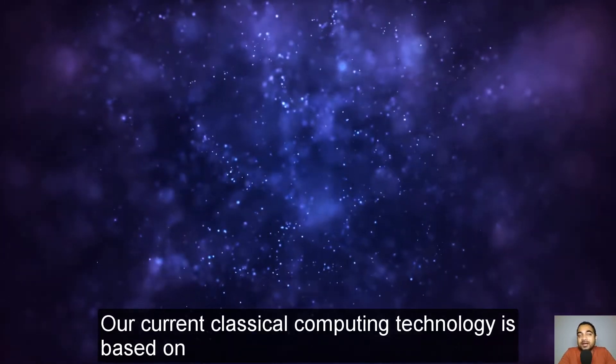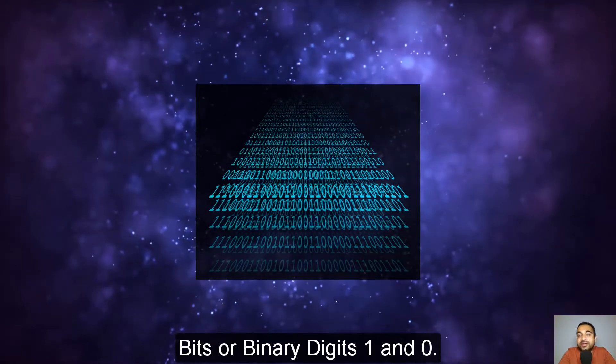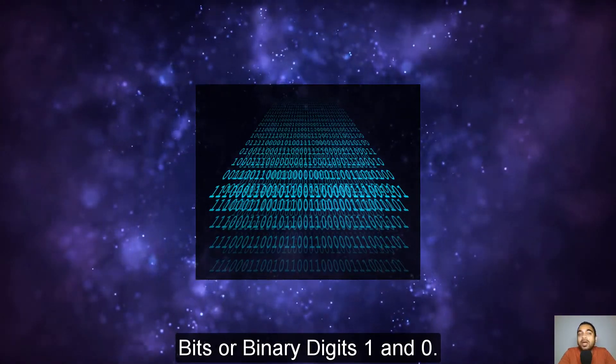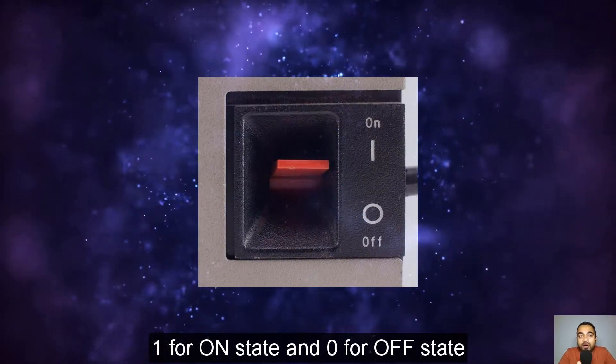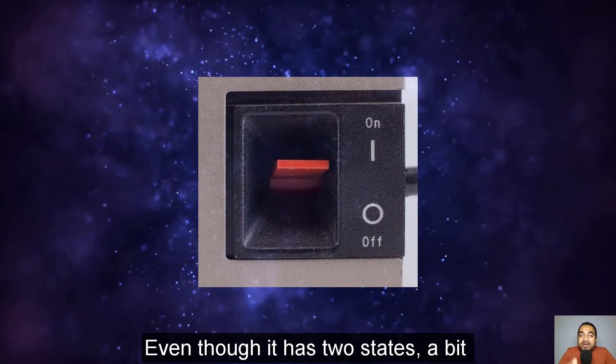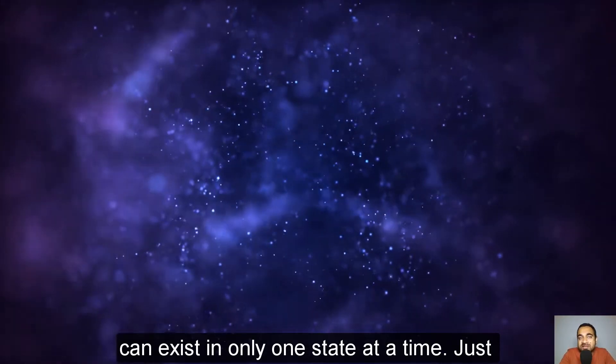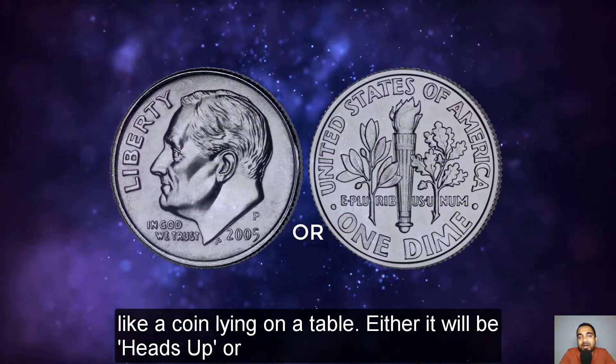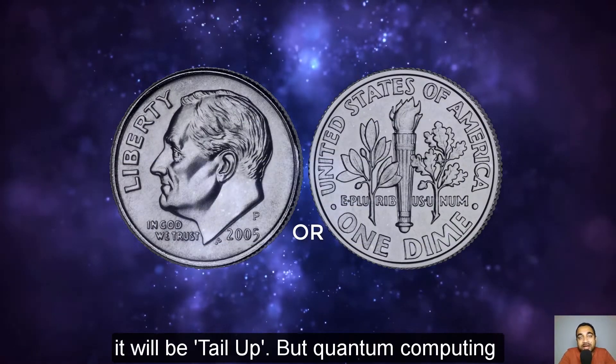Our current classical computing technology is based on bits or binary digits, 1 and 0. 1 for on state and 0 for off state. Even though it has two states, a bit can exist in only one state at a time, just like a coin lying on a table. Either it will be heads up or it will be tails up.